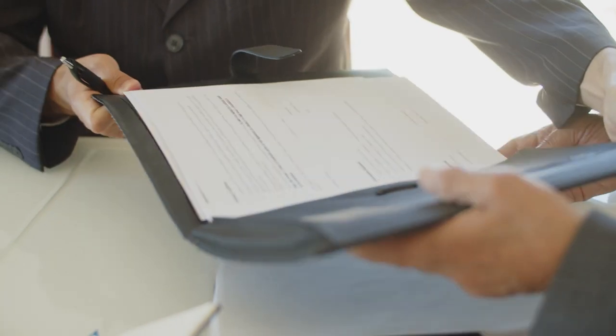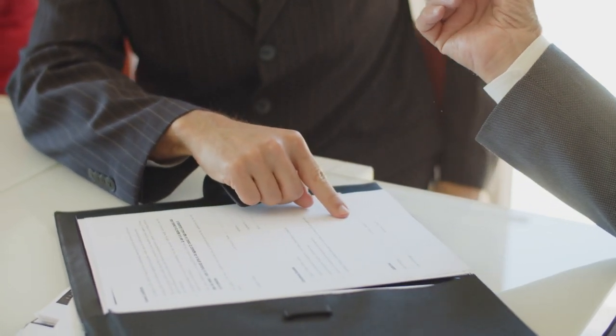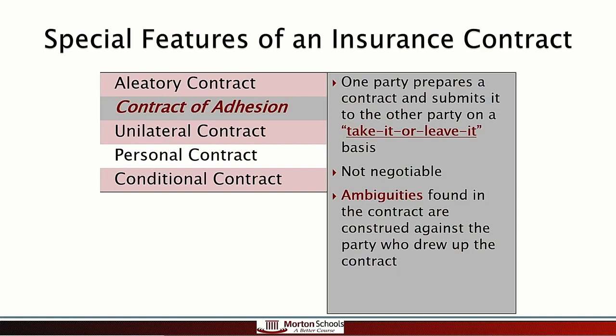For example, you're meeting with your leasing agent and the agent says the rent's due on the 1st with a late fee starting on the 10th. You say the 10th doesn't really work for me — let's make the late fee start after the 20th. The leasing agent says no, the contract says late fee after the 10th, take it or leave it. An insurance contract works the same way. If there's something in the contract you don't like, that's the way it's written — it's not negotiable between the two parties.